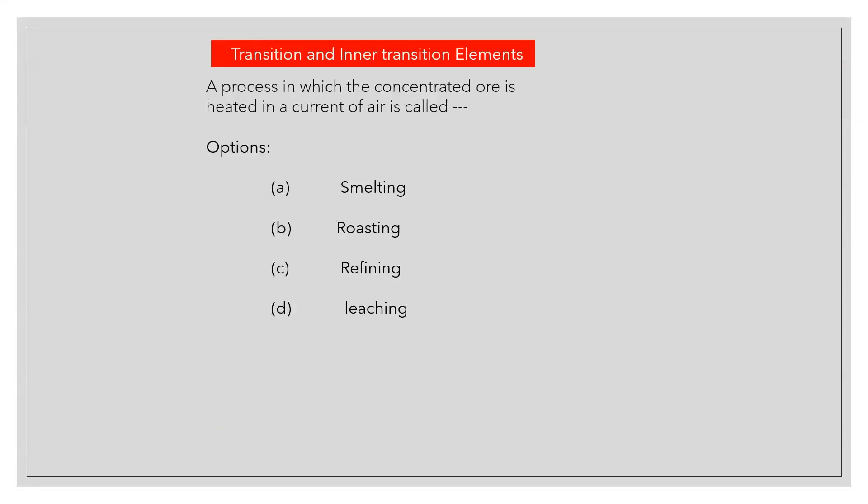A process in which the concentrated ore is heated in a current of air is called? Answer B: Roasting.